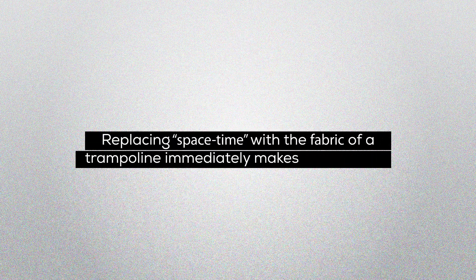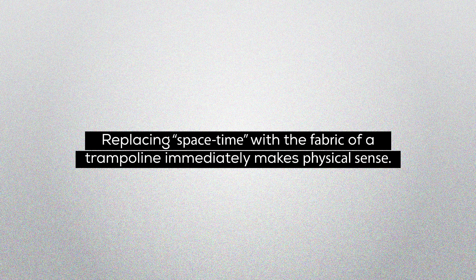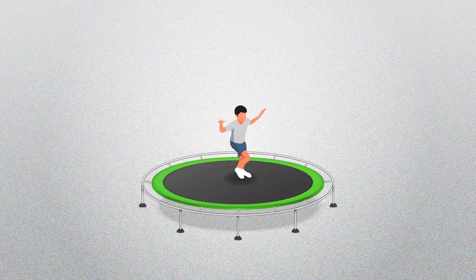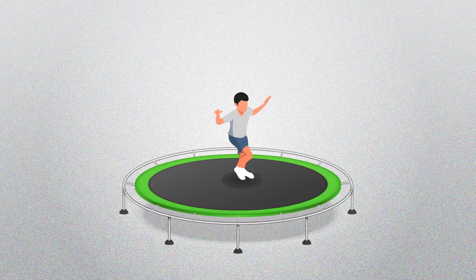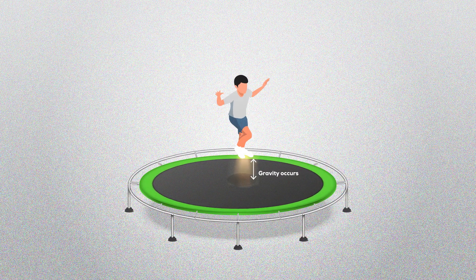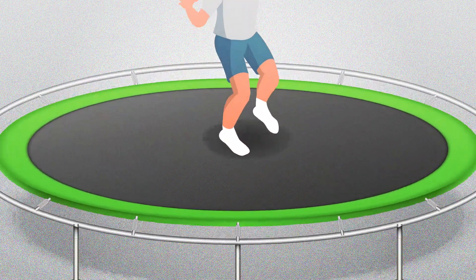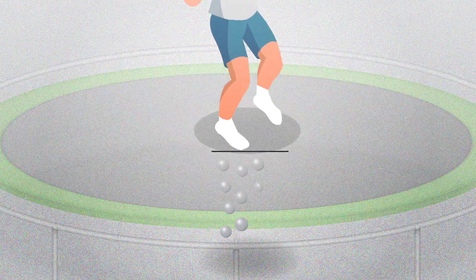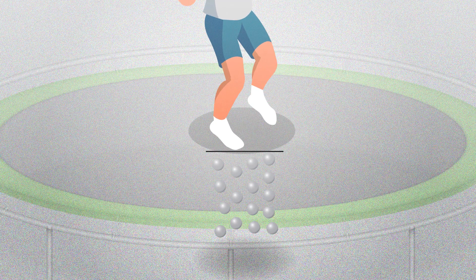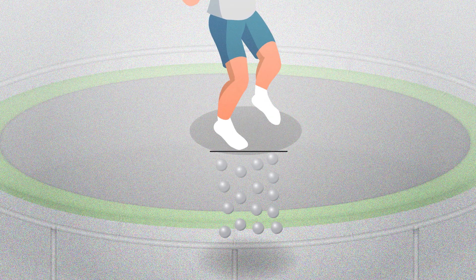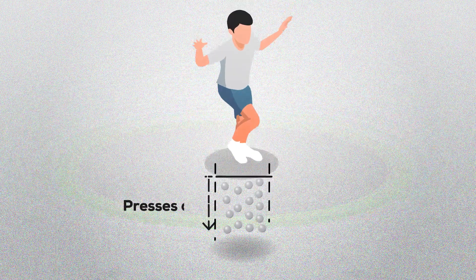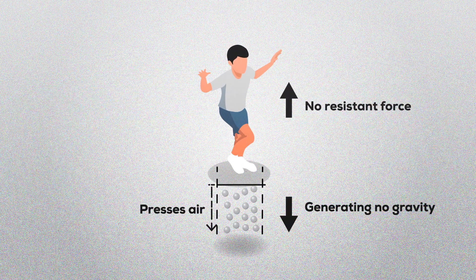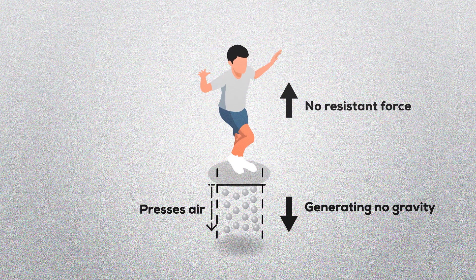Replacing space-time with the fabric of a trampoline immediately makes physical sense. When stepping on a trampoline, pressing and stretching its fabric, one immediately meets a resistant opposite force that pushes an individual upward. Gravity occurs in the area sandwiched between the trampoline surface and the soles of one's feet. Whatever exists under your feet at that moment will be stuck to your souls. Without the trampoline, one's foot presses on nothing except air, encountering no resistant force and generating no gravity.